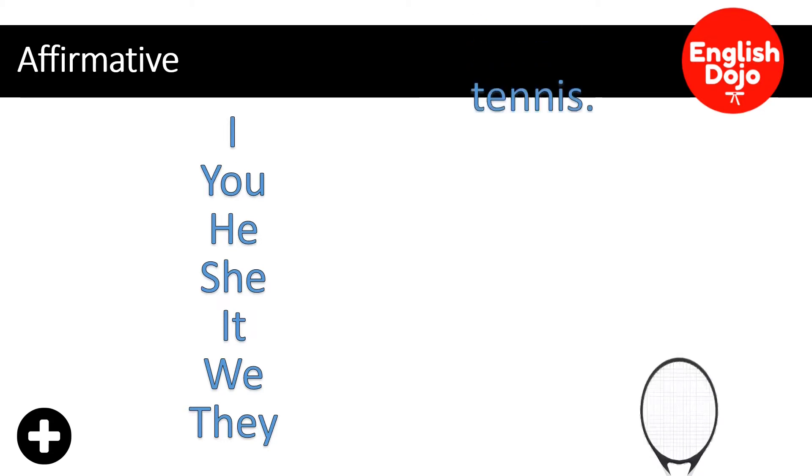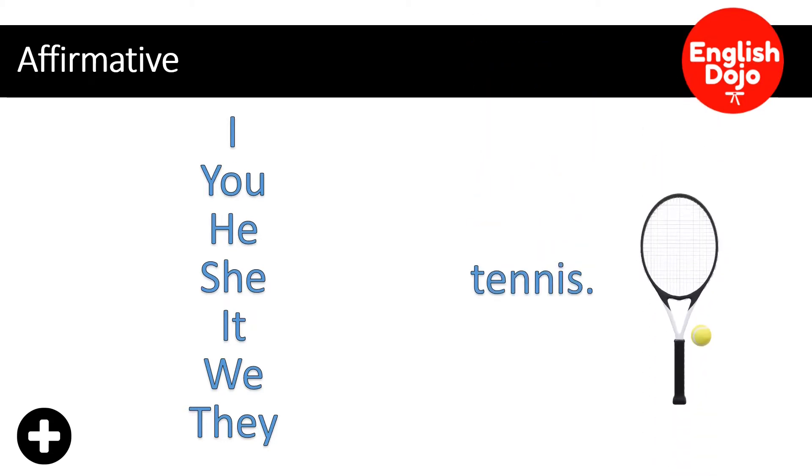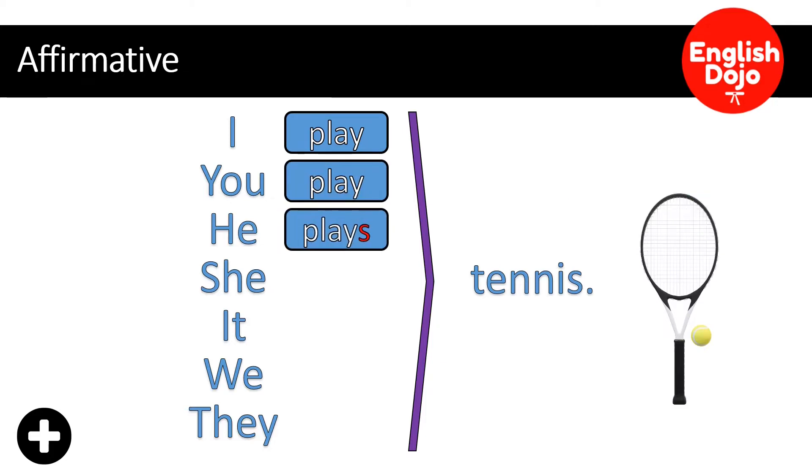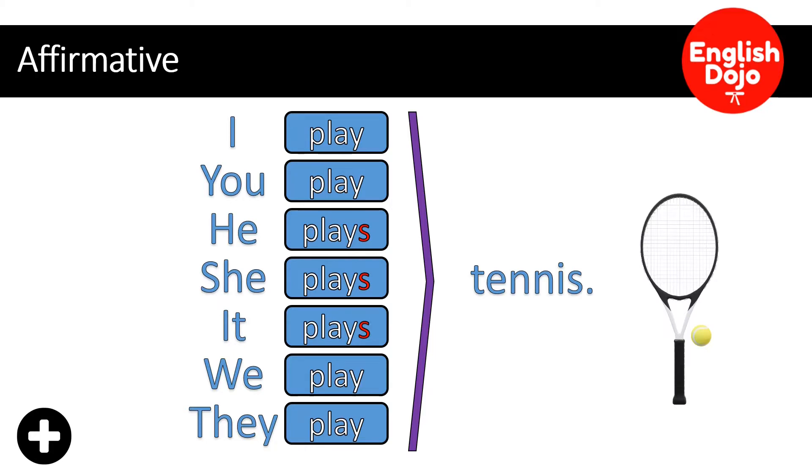Vamos a conjugar el verbo play. Y el verbo va a ser tennis, because I like tennis. So, let's conjugate. I play tennis. You play tennis. He plays tennis. She plays tennis. It plays tennis. We play tennis. And they play tennis. Entonces, si te fijas, la S es muy importante ponerla para la tercera persona. O sea, he, she, it.